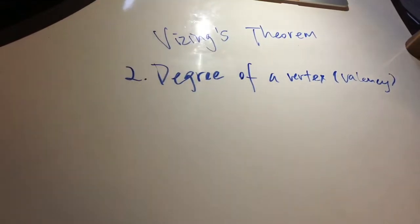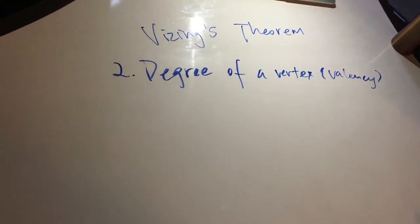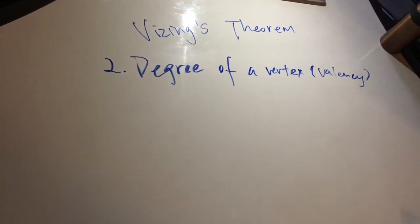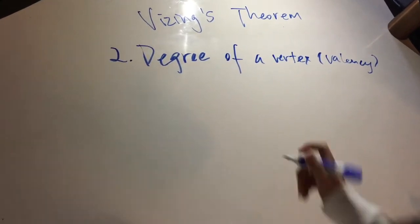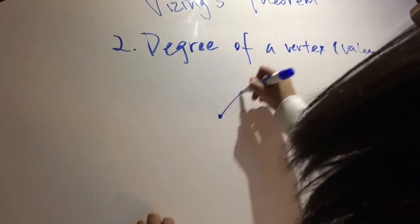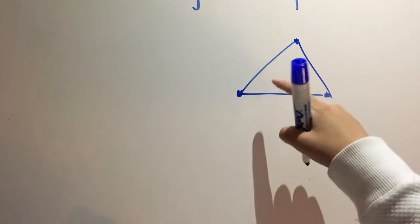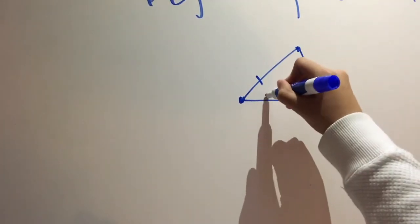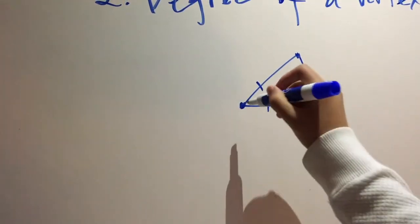Second, let me introduce the degree of a vertex, which is also called valency. The degree of a vertex is the number of graph edges which touch the vertex. For example, in this graph, the degree of the vertex is two, because there are two graph edges which touch this vertex.